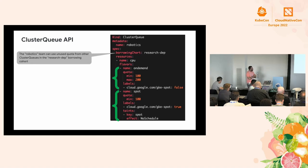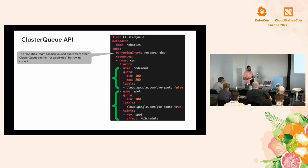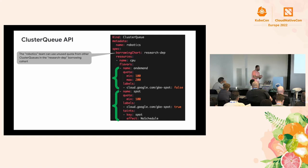One last thing in the API to mention is the borrowing cohort. Different ClusterQueues can be grouped into a borrowing cohort, allowing some form of fair sharing where unused quota from one ClusterQueue can be used by another. For example, if the robotics team is not using all of their quota, a different team within the same research department cohort can use it.